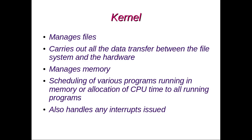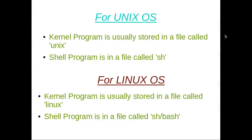The kernel program is usually stored in a file called 'unix', whereas the shell program is in a file called 'sh' for the UNIX operating system. For the Linux operating system, the kernel program is in a file called 'linux' and the shell program is in 'sh' or 'bash'.